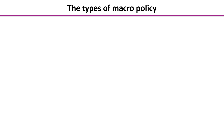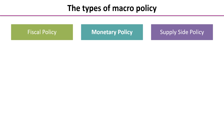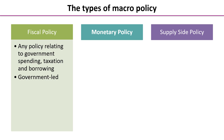Next, we're going to look at the types of macroeconomic policy. There are three main forms of macroeconomic policy that you will learn about in your A-level syllabus. Fiscal policy is any policy relating to government spending, taxation and borrowing, and this is led by the government — in particular the Chancellor of the Exchequer, who will use the budget during March and talk about the plans for government spending and taxation for the next financial year.